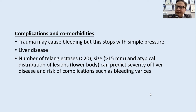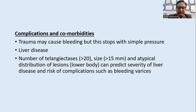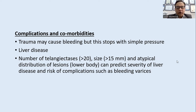Generally these are benign lesions, but they can cause bleeding due to trauma, which stops with pressure. They can indicate liver disease: if more than 20 lesions, size more than 15 mm, and atypical lower body distribution, they predict the severity of liver disease, and such patients are also at risk of having bleeding varices.